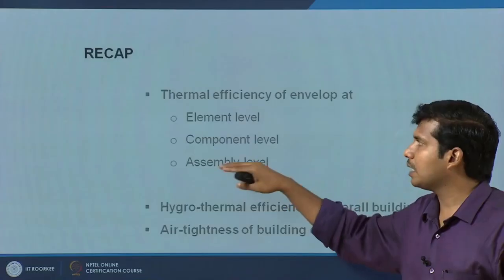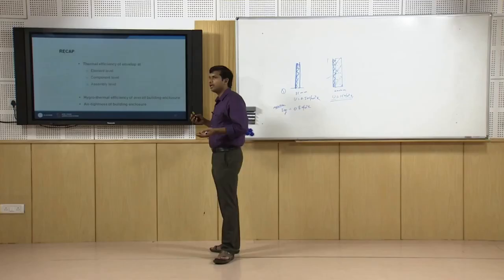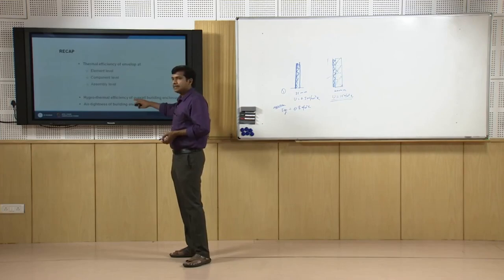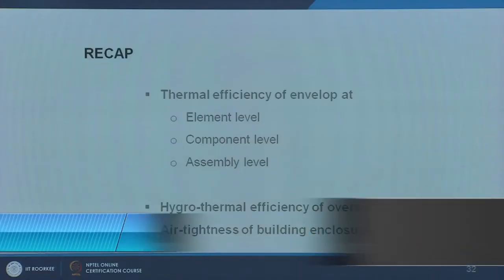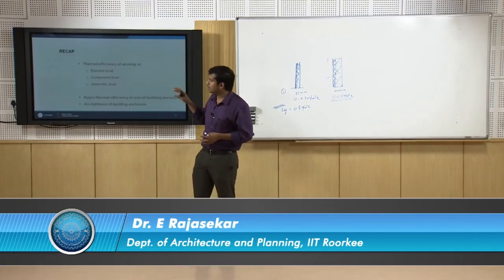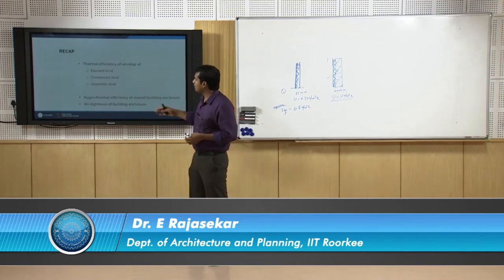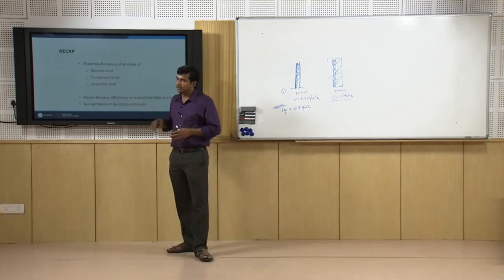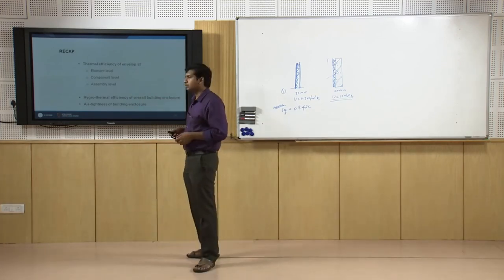The Indian standard also gives critical weightage to maximum heat gain and allowable heat transfer through the system — from element level, component level, to assembly level. Apart from just one or two international examples, there are two other important factors: moisture transmission through the building envelope and air tightness of the building enclosure. While not covered in this module, they play a significant role in overall thermal performance of the building enclosure.